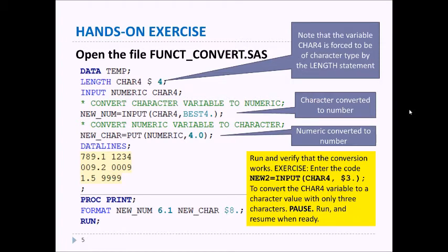The NEW2 equals INPUT(CHAR4,$3.). This is similar to the other INPUT statement except this time notice that the conversion or the informat that we're using here is a dollar sign three dot, which is going to tell SAS during the conversion to only keep the first three characters of that value. So enter that new code, pause, and then when you're ready to return, resume.